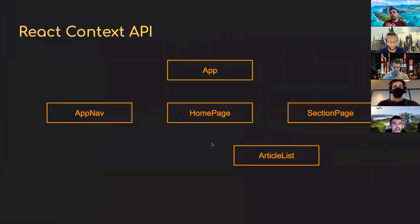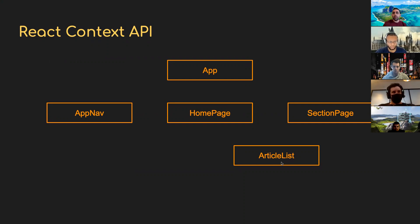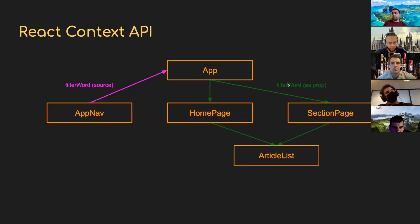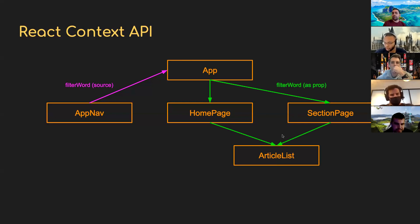Looking at our diagram, the key thing is that ArticleList is the actual component showing our article teasers. Homepage and SectionPage both rely on ArticleList. My idea is to centralize the filtering in ArticleList. From the changes we've made: AppNav provides filterWord, passes it up to App, and App is passing down filterWord to Homepage and SectionPage. I'm going to have that prop passed down to ArticleList as well.